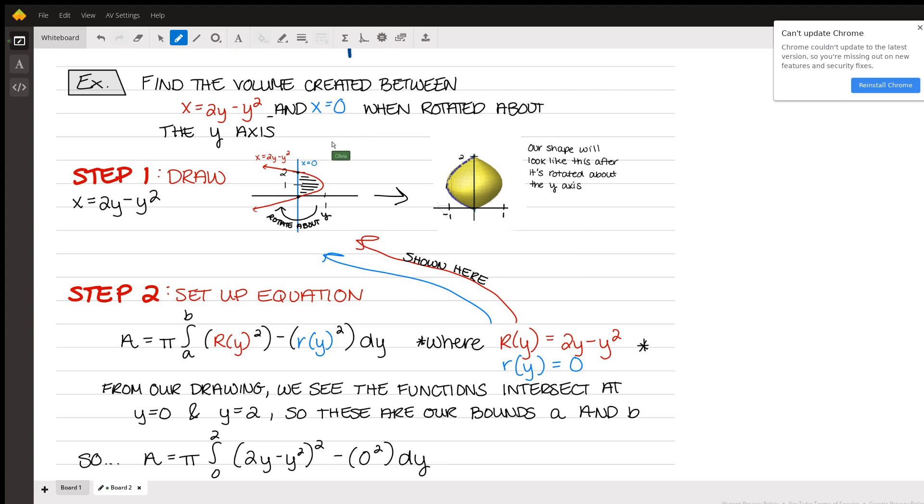Okay, so let's get started. This problem asks us to find the volume created between the function x equals 2y minus y squared and x equals 0 when rotated about the y-axis. Like I said, I changed it to the y-axis, not the x-axis.